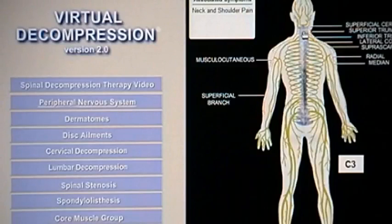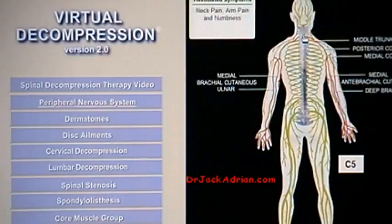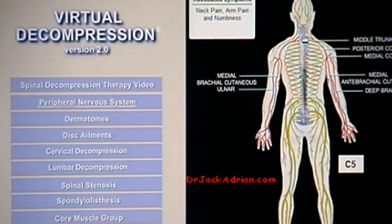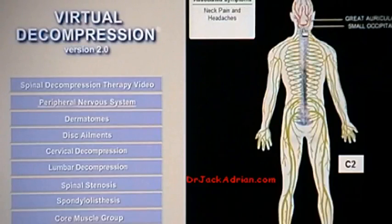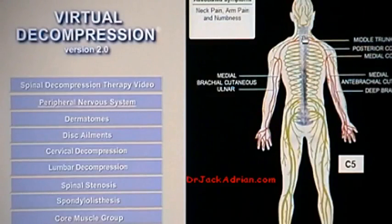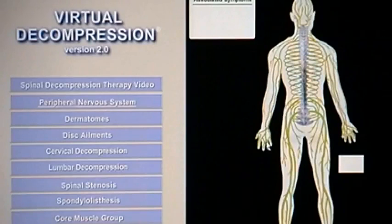It's important to understand that the same demonstration we just shared about disc bulges and herniations of the lower back also occurs in the cervical spine, or the neck. Disc bulges of the neck can not only cause pain in the neck, but they can go up into the head and cause head pain, as well as venture into the arms with arm pain, numbness, tingling, and weakness all the way into the hands and fingers.